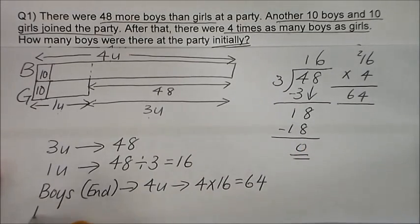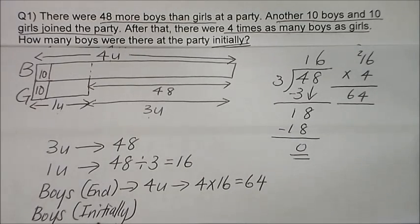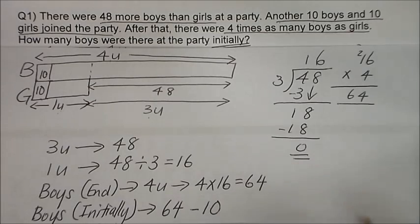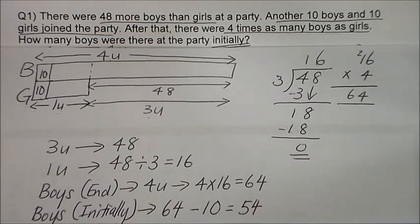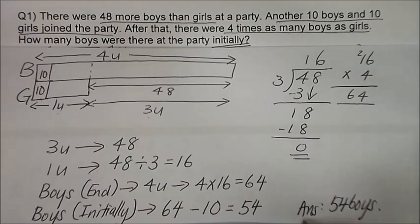Now we want to find the number of boys initially — the boys at first. The number of boys at the end, take away the 10 boys that joined the party: 64 minus 10 gives us 54. So 54 boys were at the party initially. The answer is 54 boys.